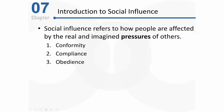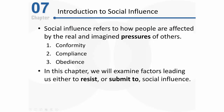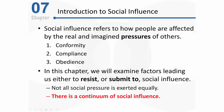We're going to talk about three key topics: conformity, compliance, and obedience. Each one of these concepts is related but distinguished from each other by the amount of pressure exerted on us in each situation. This chapter will examine several factors that lead us to either resist or submit to social influence. It's helpful to view this chapter through what we call a continuum of social influence, where conformity, compliance, and obedience form a range spanning from relatively light to pretty heavy social pressure.